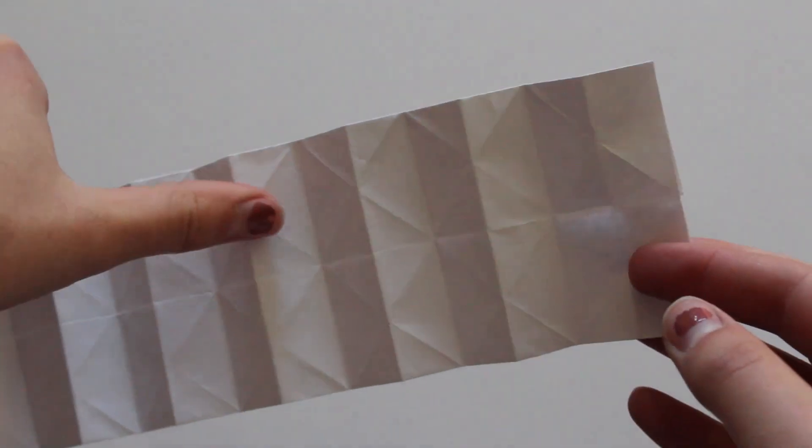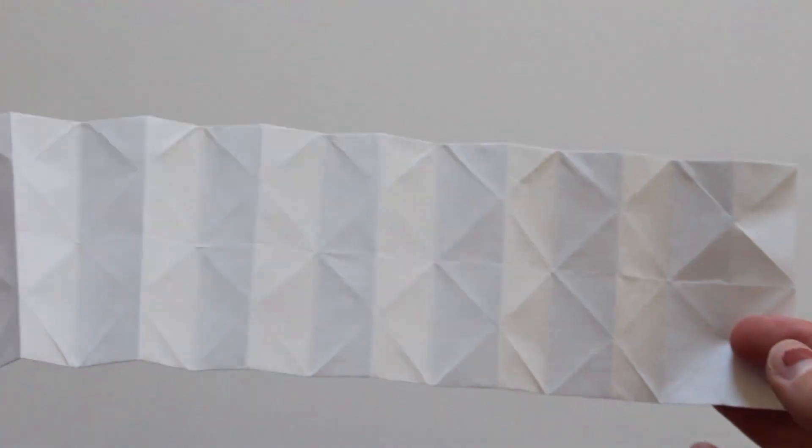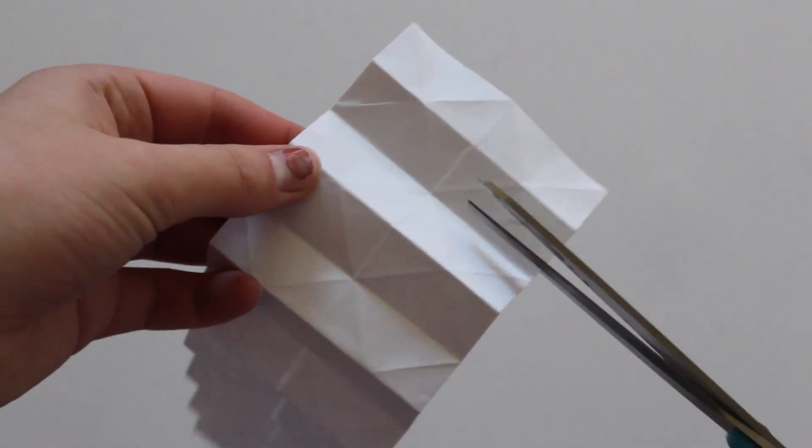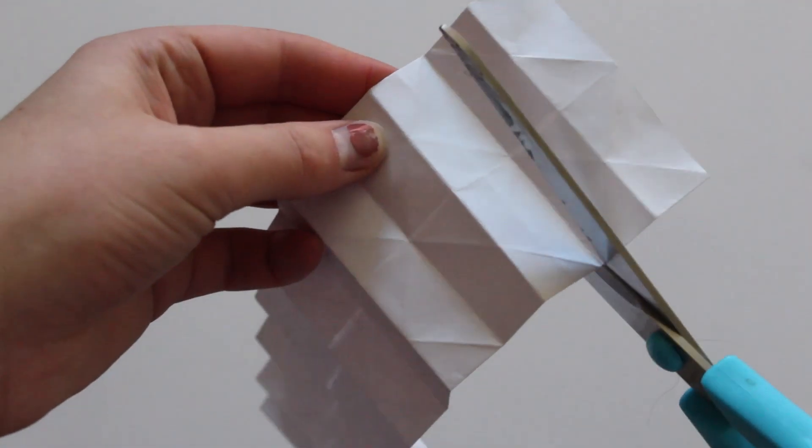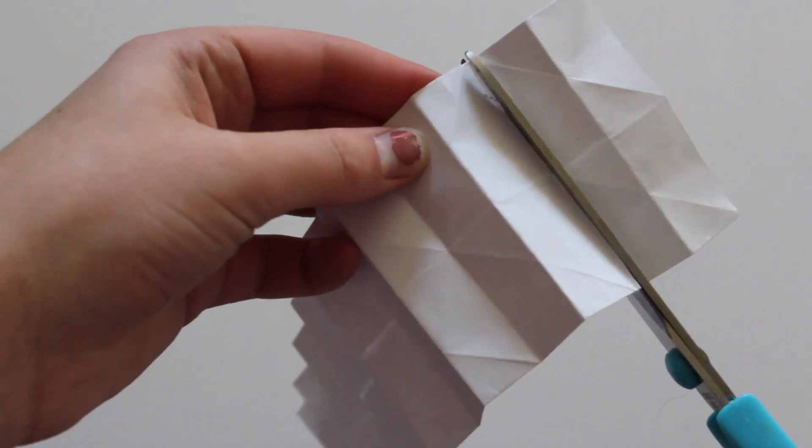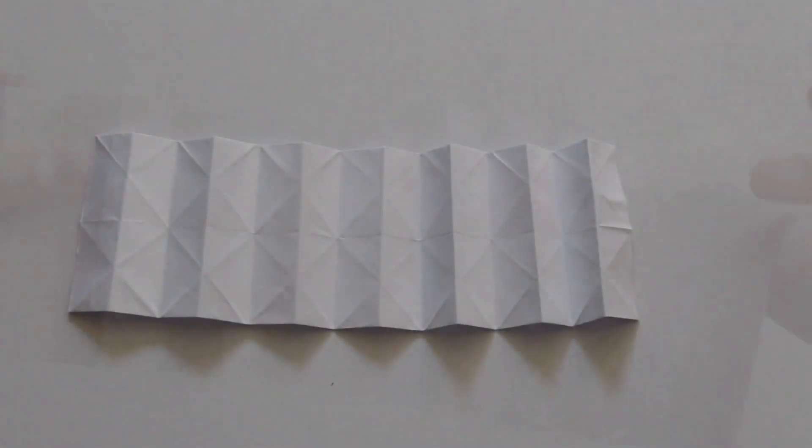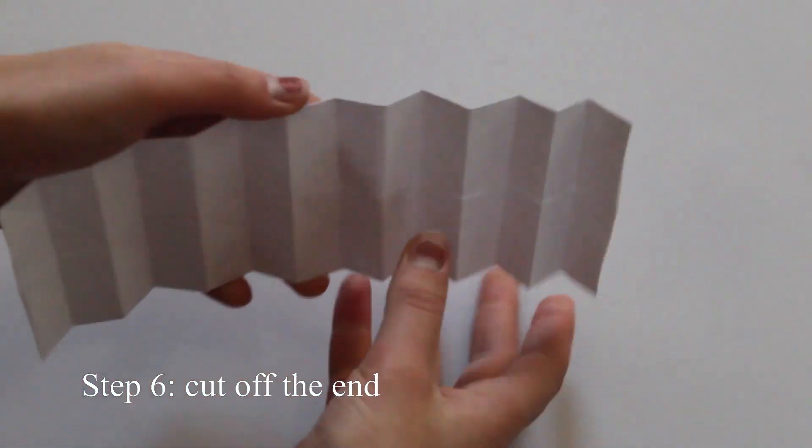Okay, so now that you have this accordion type shape, we're just going to cut off the last unit since this is a hexahydroflex and not a heptahydroflex. Now we can finally link the whole thing together.